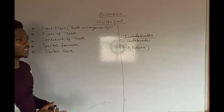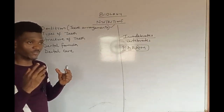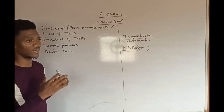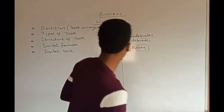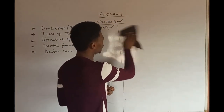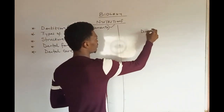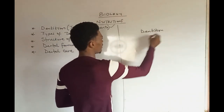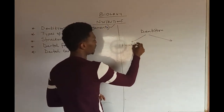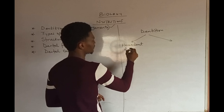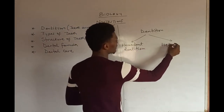Coming back, dentition talks about the total number of teeth in a given organism as well as their arrangement. To go further, we have two broad divisions of dentition: we have homodont dentition and we have heterodont dentition.